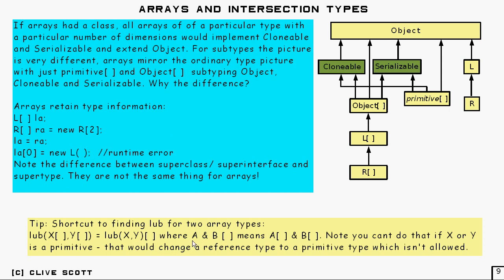So what it means is, if this least upper bound of X and Y turns out to be A and B, then A and B array really means sort of like A array and B array. And you'll note that you can't do that if X or Y is a primitive.